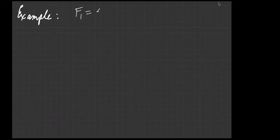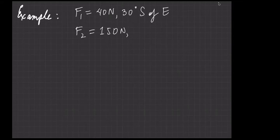When solving problems, I hope you take note of the given values first. Write the given variables. In our problem, force one equals 40 newtons at 30 degrees south of east. Force two is 150 newtons southwest. There's no explicit angle given for F2, but we can figure out how to visualize these angles.